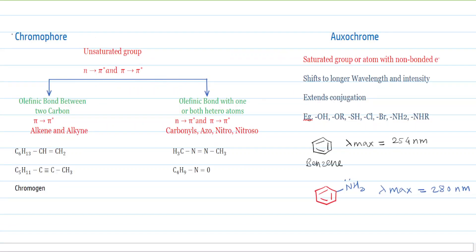The first basic term in UV-Vis spectroscopy is the chromophore. A chromophore is the unsaturated group present in a molecule which absorbs ultraviolet and visible radiation, causing n to π* transition as well as π to π* transition. It is the unsaturated group, so there is a presence of unsaturation — it may be a double bond or a triple bond. It is divided into two types.